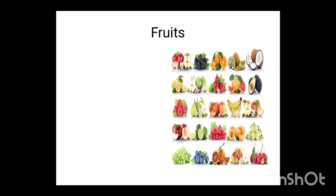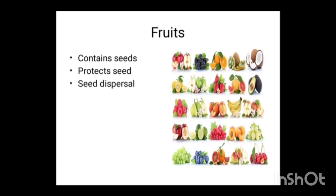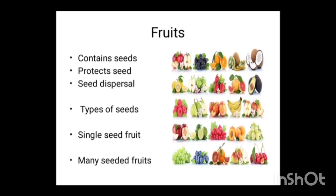Now let us see about the fruits. Fruits contain seeds — not all fruits, but most of the fruits contain seeds. Fruits protect the seed, and seed dispersal is done through fruits. There are different types: single seeded fruits and many seeded fruits.